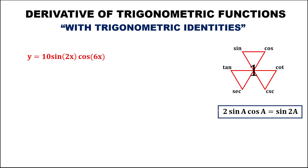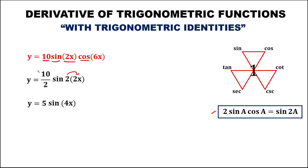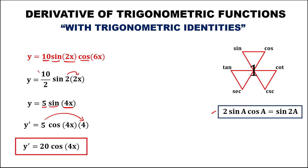For the next given, again using the double angle identity for sine because we have sine times cosine. We divide the coefficient by 2 then multiply the angle by 2. Simplifying, 2 times 2x gives 4x, and 10 divided by 2 gives 5. So y equals 5 sine 4x. Finding the derivative: bring down 5, times the derivative of sine, which is cosine, times the derivative of 4x, which is 4. So y prime equals 20 cosine 4x.